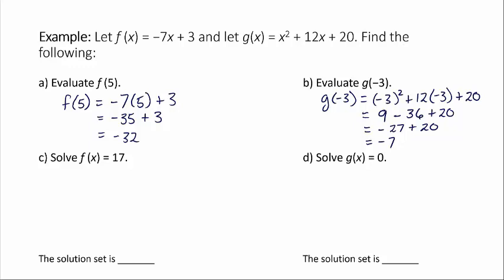Okay, so in contrast, now we're going to solve. So when we say solve f(x) is equal to 17, we're looking for the x value where the function f has an output of 17. So to do that, when we're saying f(x) is equal to 17, well, what is f(x)? f(x) is -7x + 3. And if that's f(x), and we're saying f(x) is equal to 17, I'm going to set that whole expression equal to 17.